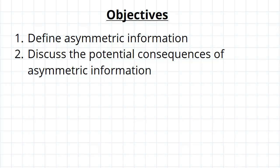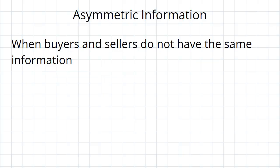G'day guys. In this video we're going to have a look at the concept of asymmetric information and the potential consequences that it has when it occurs in the market. Asymmetric information, as the name implies, is when buyers and sellers don't have the same amount of information — one has more than the other.